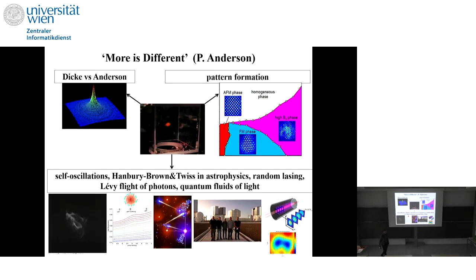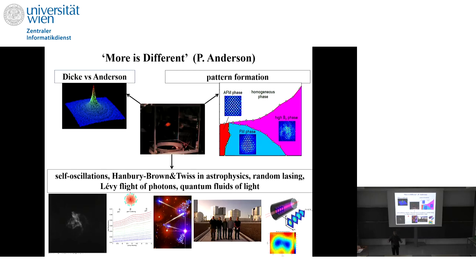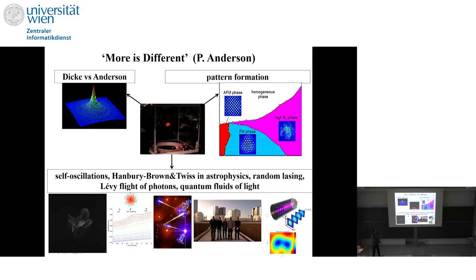What we have specialized in for the last 20 years and more is to see what happens if you have large systems of cold atoms. Typically we trap many, many atoms — 10 to the 9, 10 to the 10 atoms — and because you have many atoms, you have new emerging laws coming out of the system. My favorite topic is Anderson localization of light and subradiance, and I will not talk about this today.